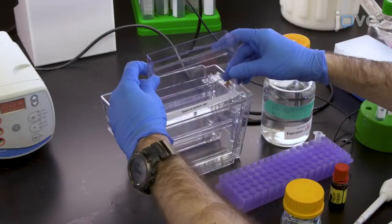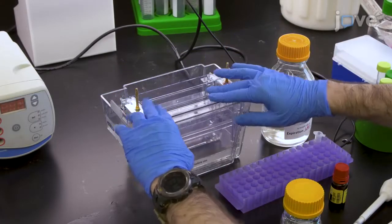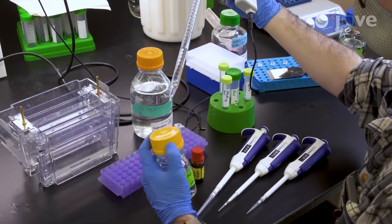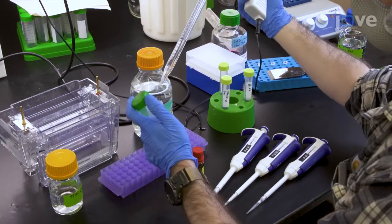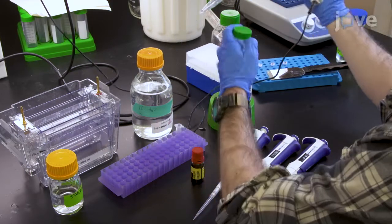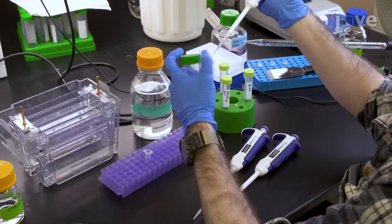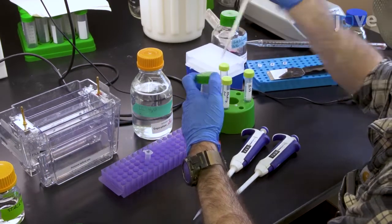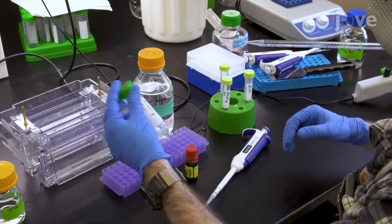Start by placing an empty cassette into the page tank. Cast the resolving gel by mixing 10 milliliters of resolving gel solution with 60 microliters of freshly prepared 10% ammonium per sulfate in a 15 milliliter tube. Then add 10 microliters of T-Med. Invert the tube gently 2 to 3 times.